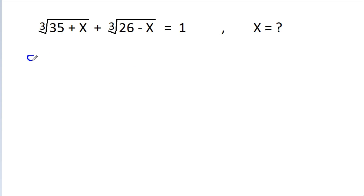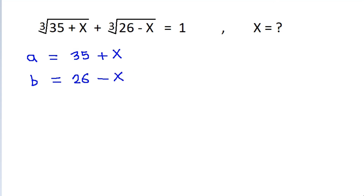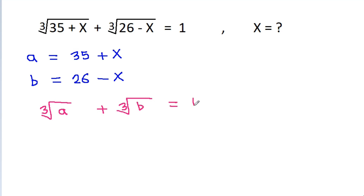So, if we take a is equal to 35 plus x and b is equal to 26 minus x, then we have √a plus √b is equal to 1.